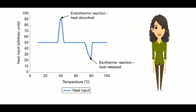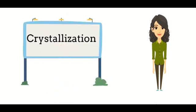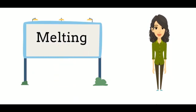This is the DTA curve. The upper curve shows endothermic reaction, while the lower portion shows exothermic reaction. Crystallization shows an exothermic DTA curve, while the melting process has an endothermic DTA curve.